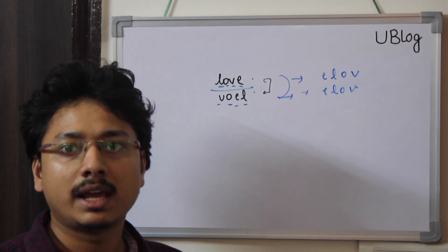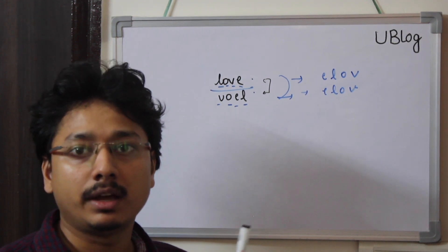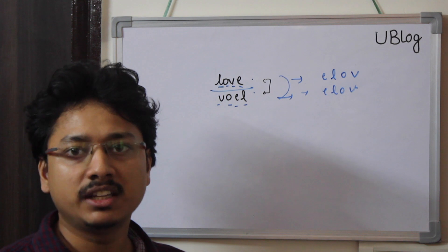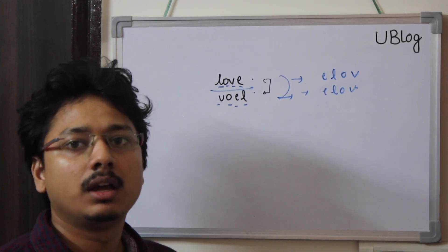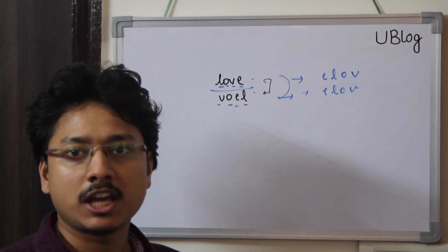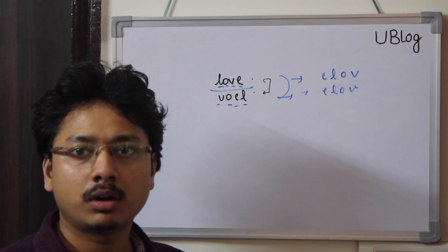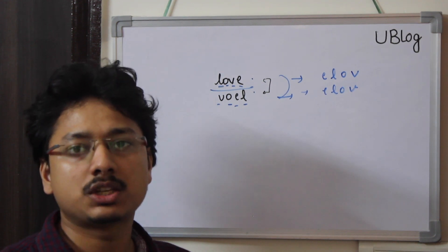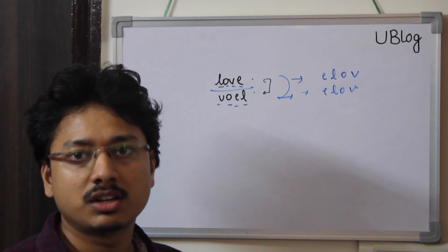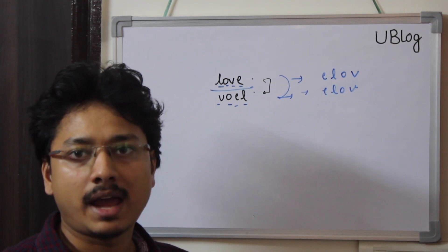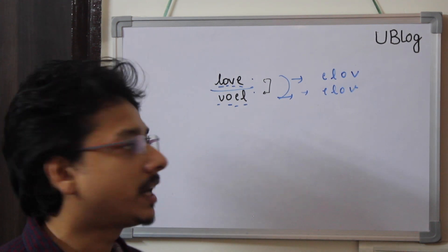If the interviewer asks you to optimize, you move to the hash map approach. Whenever a question involves keeping the count of characters or elements, hash map is the perfect choice. Why? Because fetching and inserting from a hash map is O(1) — constant time. So using a hash map does not add to the time complexity.